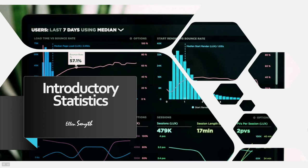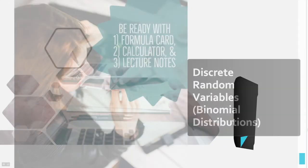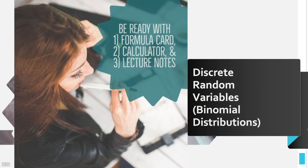Hi, and welcome to another video on introductory statistics. In this particular video, we're going to focus on what we're calling discrete random variables. Particularly, we're going to talk about binomial distributions, a special type of discrete random variable.